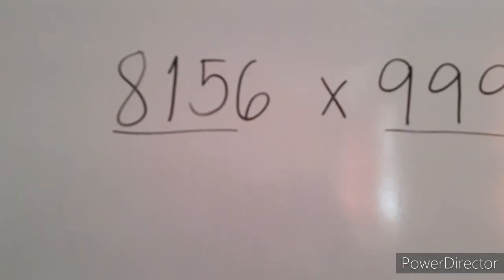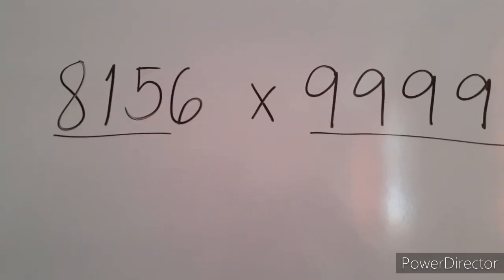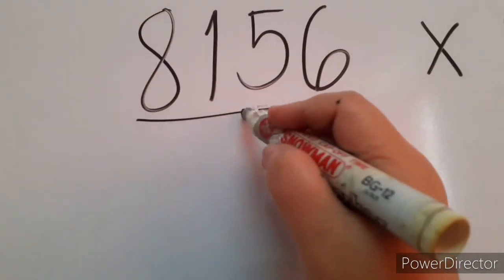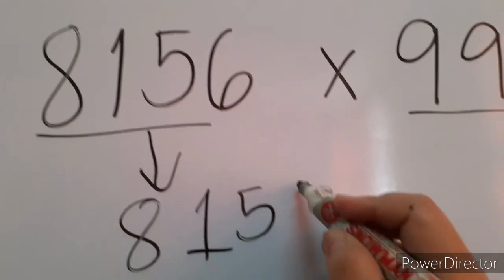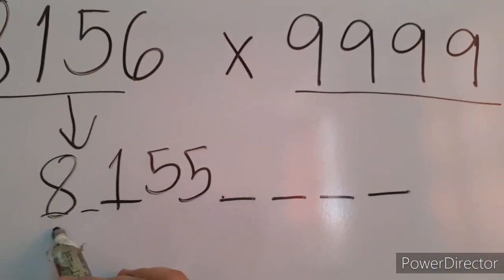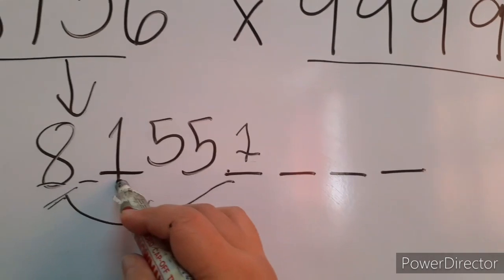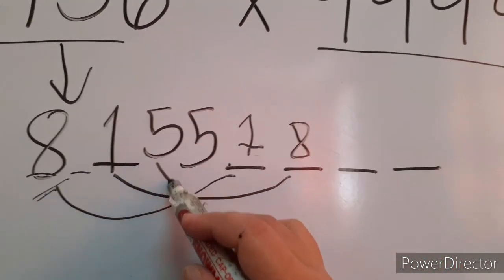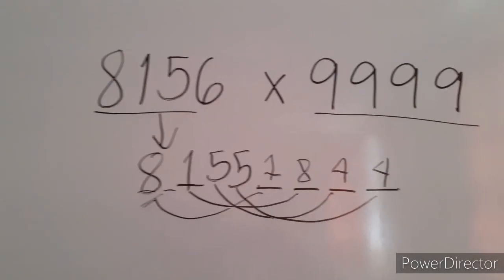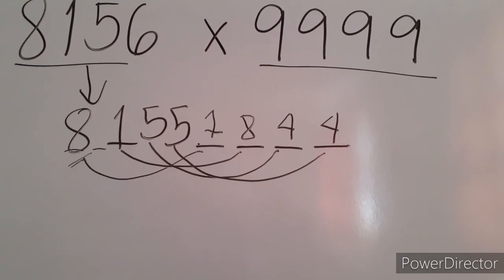So, let's have 4 digit numbers times 9,999. So, we will do the same procedure. Which number is 1 smaller than 8,156? And yes, that is 8,155. So, we need, since these are 4 digits, we need 4 digits more that when we pair to the given will give us a sum of 9. So, 8 plus blank is 9. This is 1. 1 plus blank is 9. This must be 8. 5 plus blank is 9. This is 4. And 5 plus blank is 9. This is also 4. Therefore, 8,156 times 9,999 is 81,551,844.